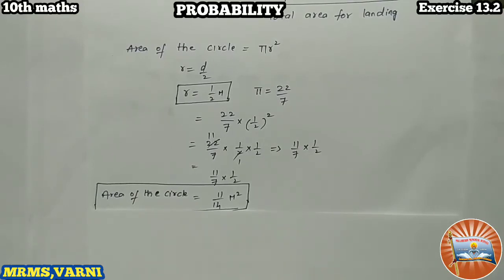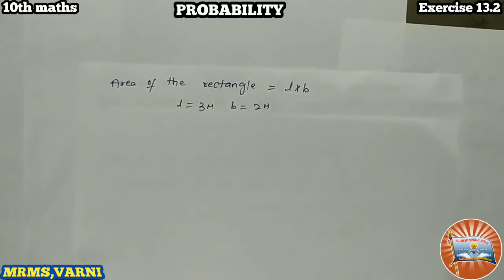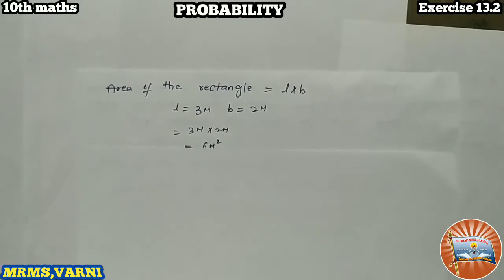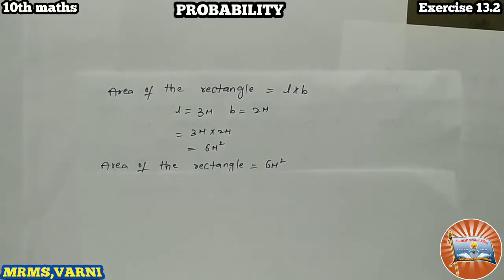We shall go for next: total area, which is nothing but rectangular area. Area of rectangle, we have length times breadth as the formula. Length given 3 meters and breadth given 2 meters. Substitute the values: 3 meter times 2 meter, it becomes 6 meter squared. This is the total area, nothing but area of the rectangle, 6 meter squared, which is the total landing area.